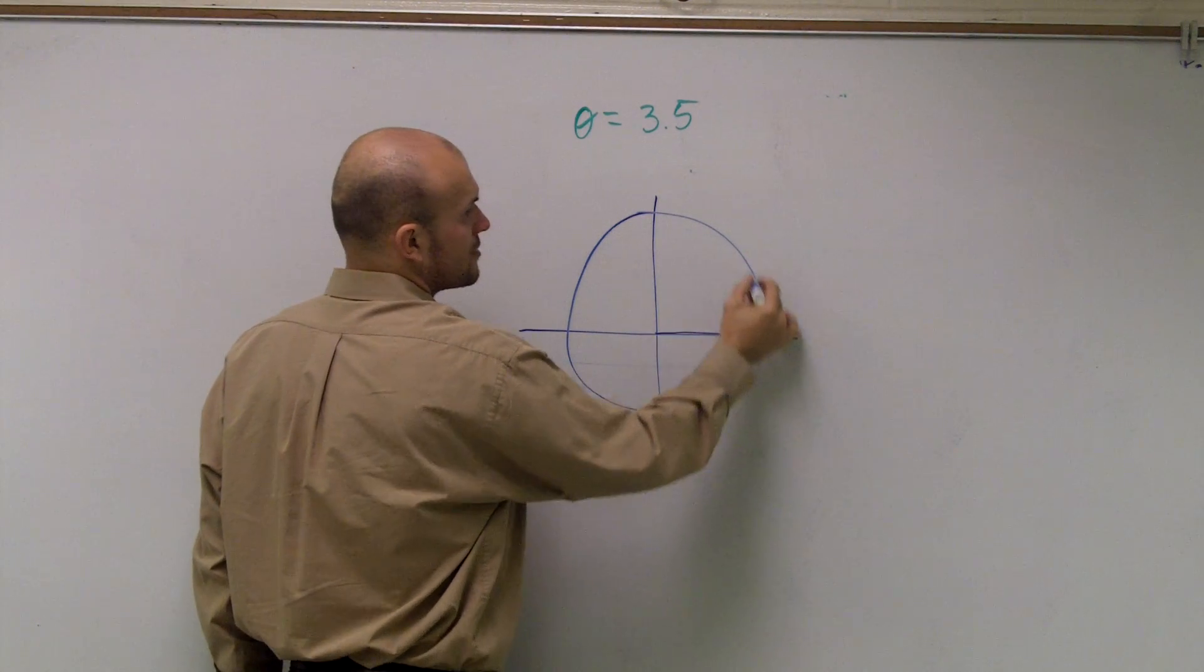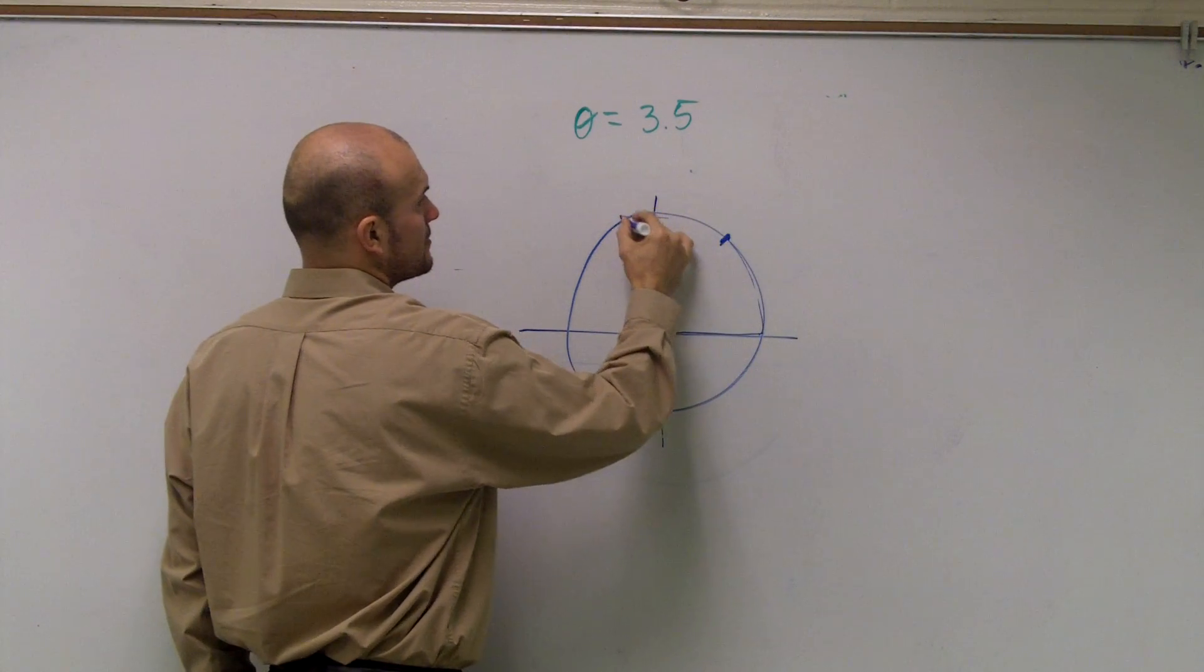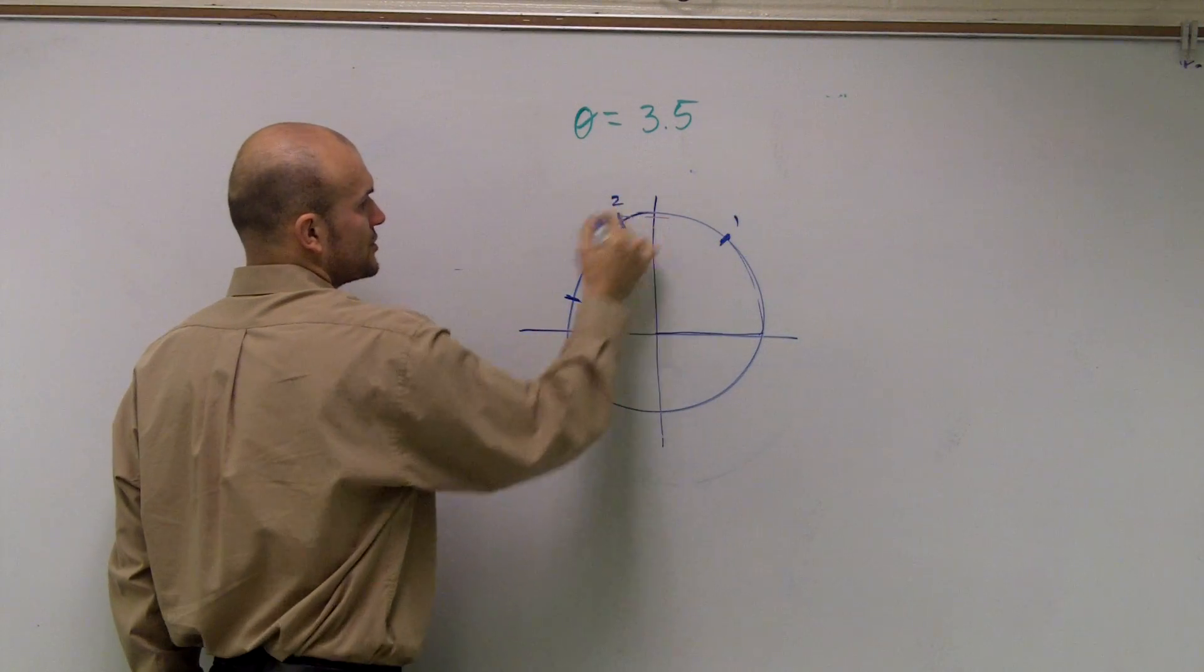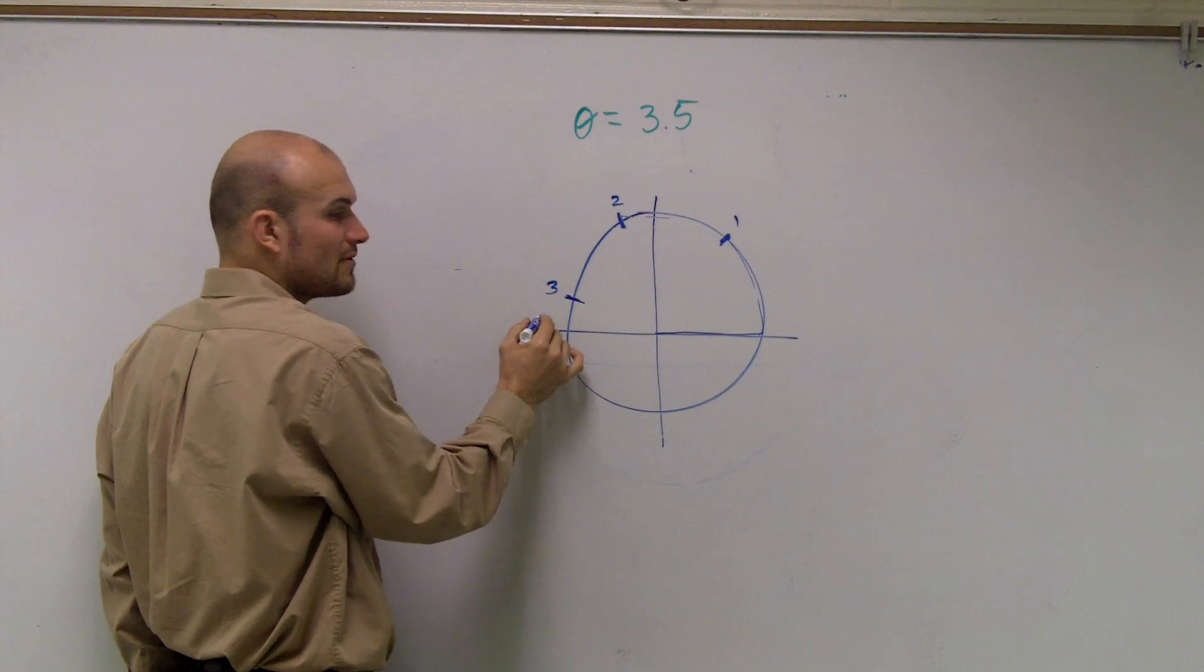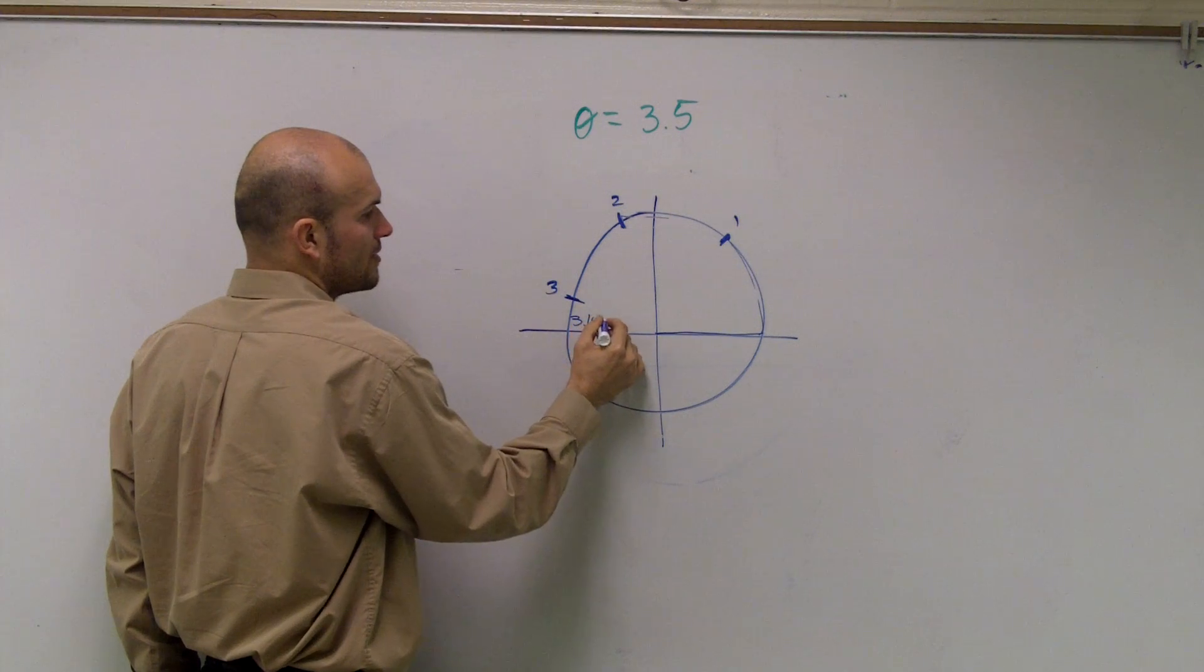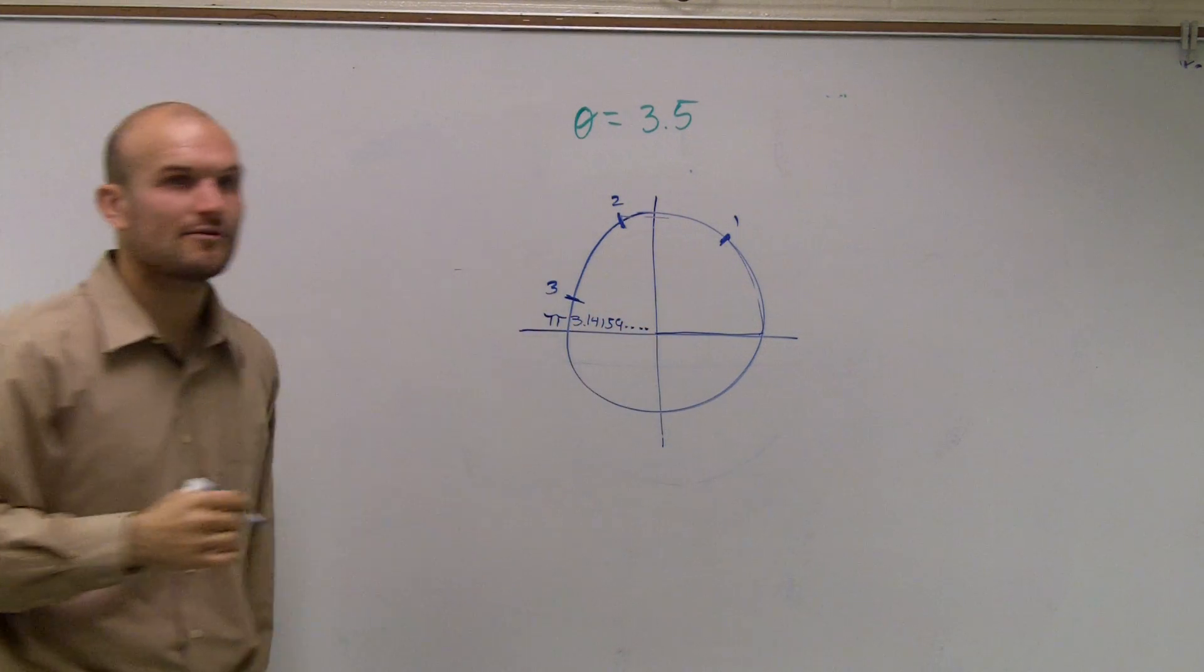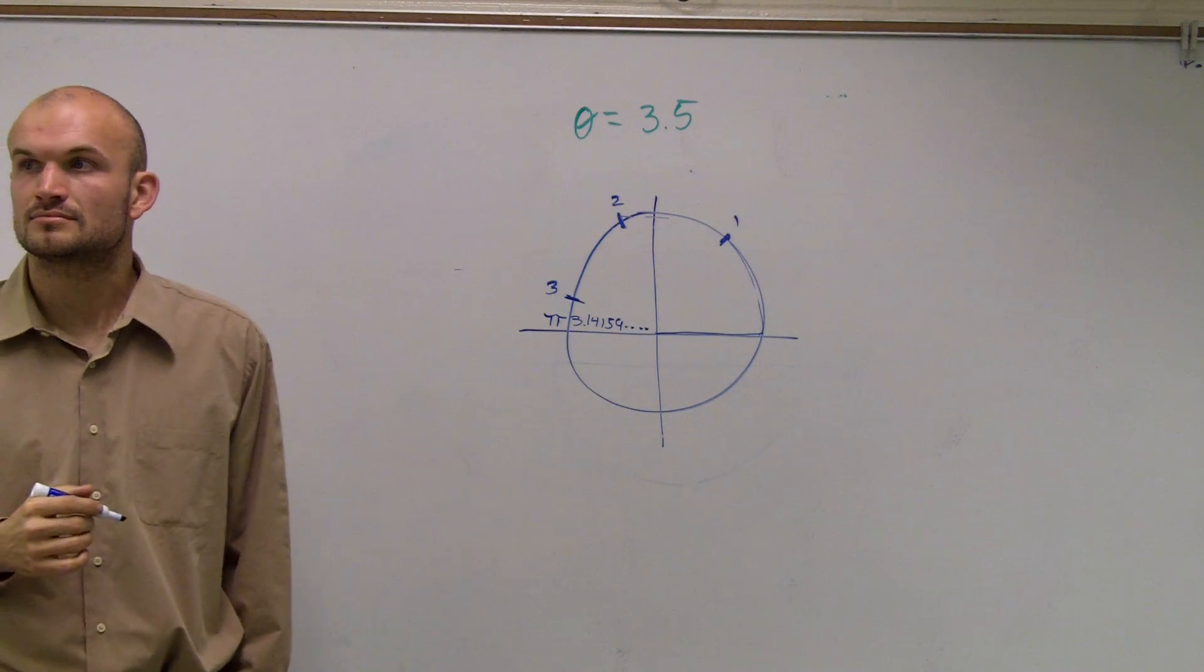So I need to remember how big is actually a radian. Remember, radian is your radius wrapped around. So you have 1, 2, 3. Remember, halfway around a circle was 3.14159, what we call pi radians, right?